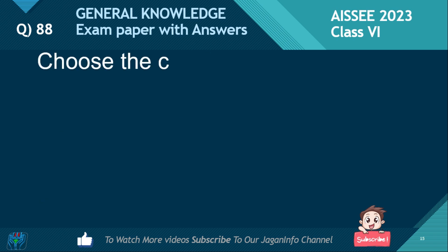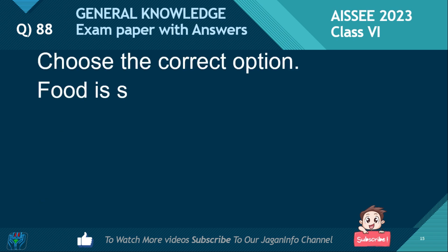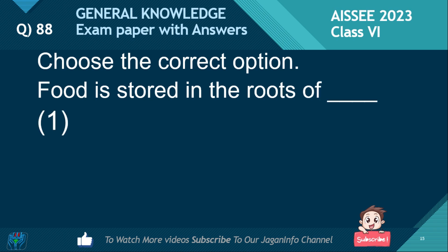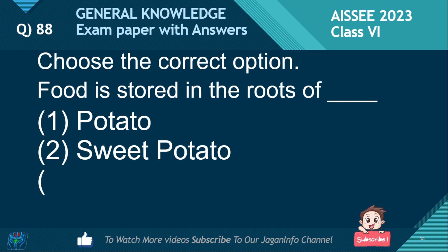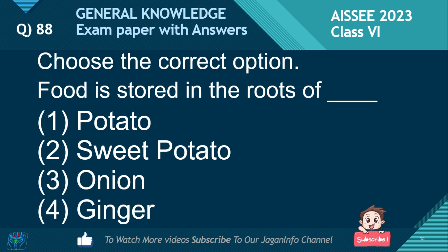Choose the correct option. Food is stored in the roots of: potato, sweet potato, onion, or ginger. If you like this video, please subscribe to our channel to watch more videos. The right answer is sweet potato.